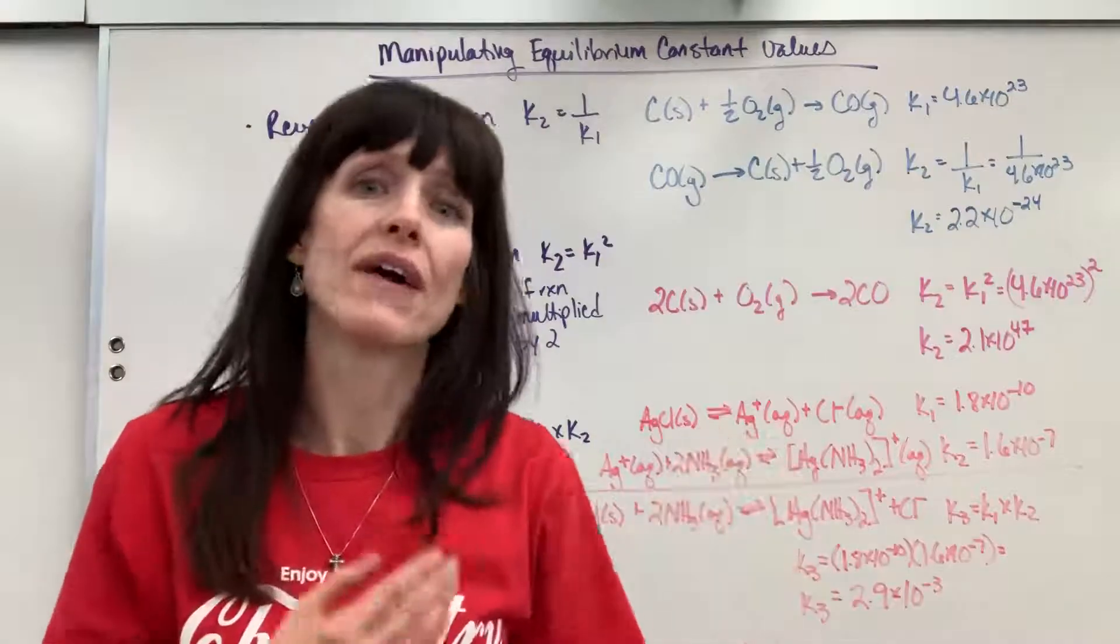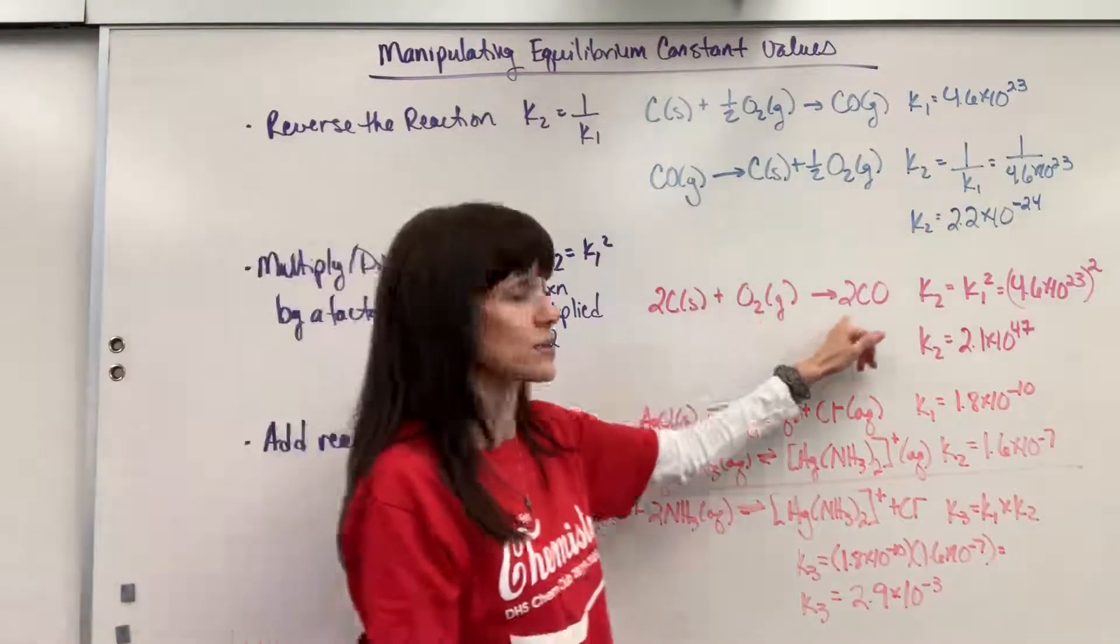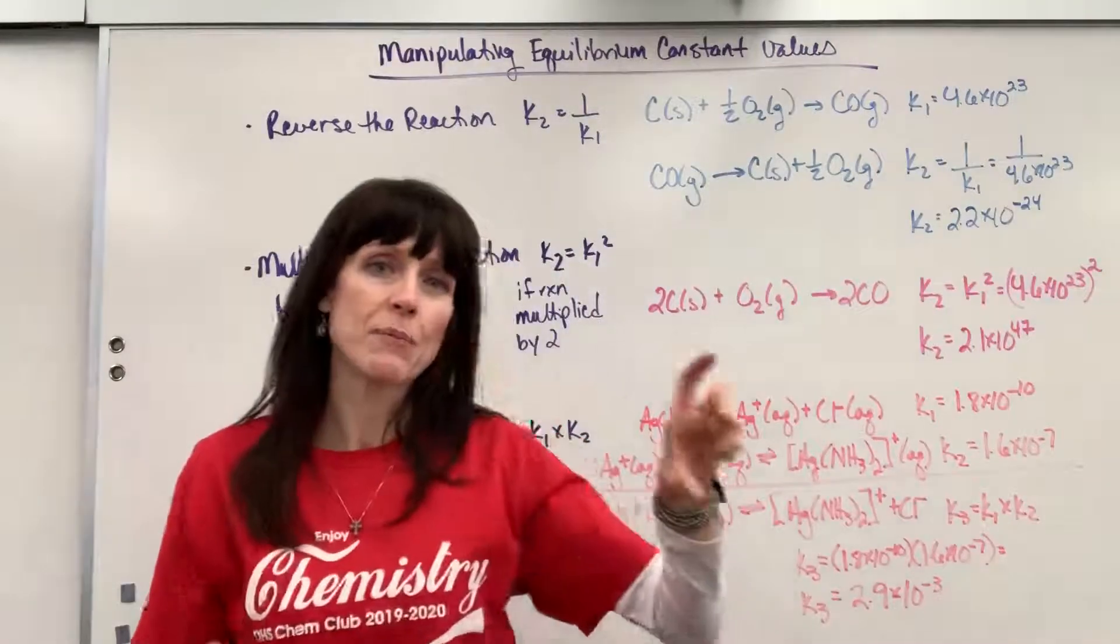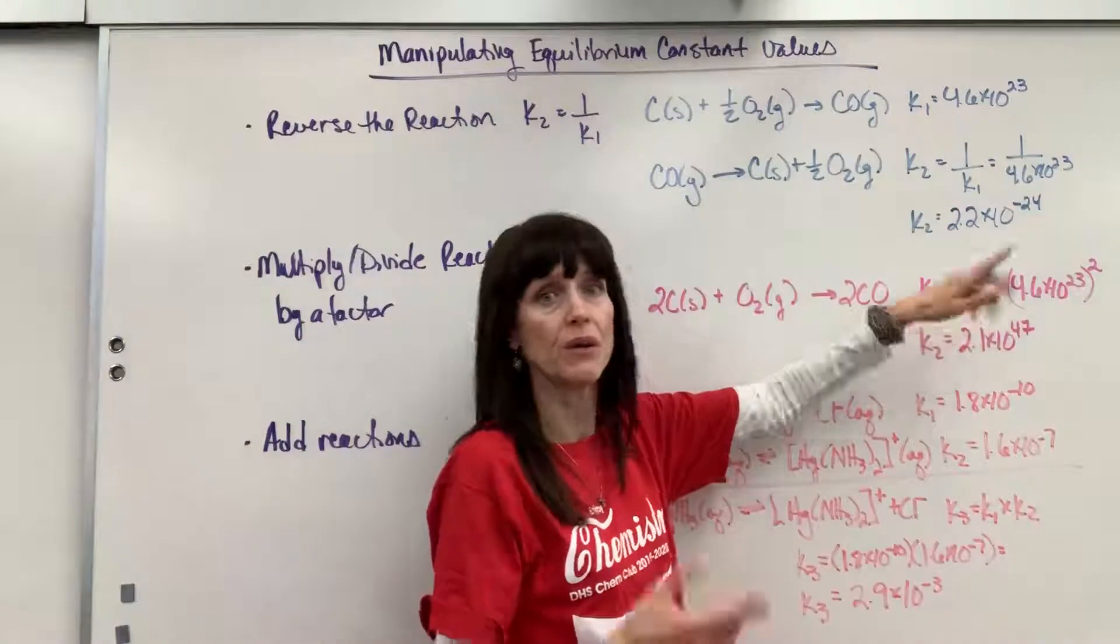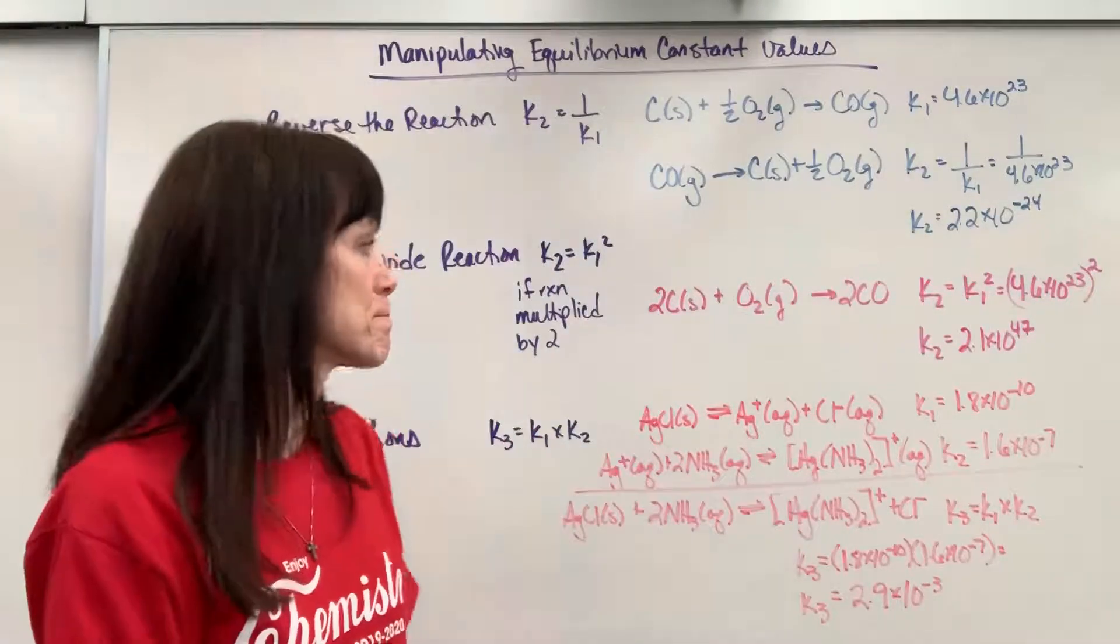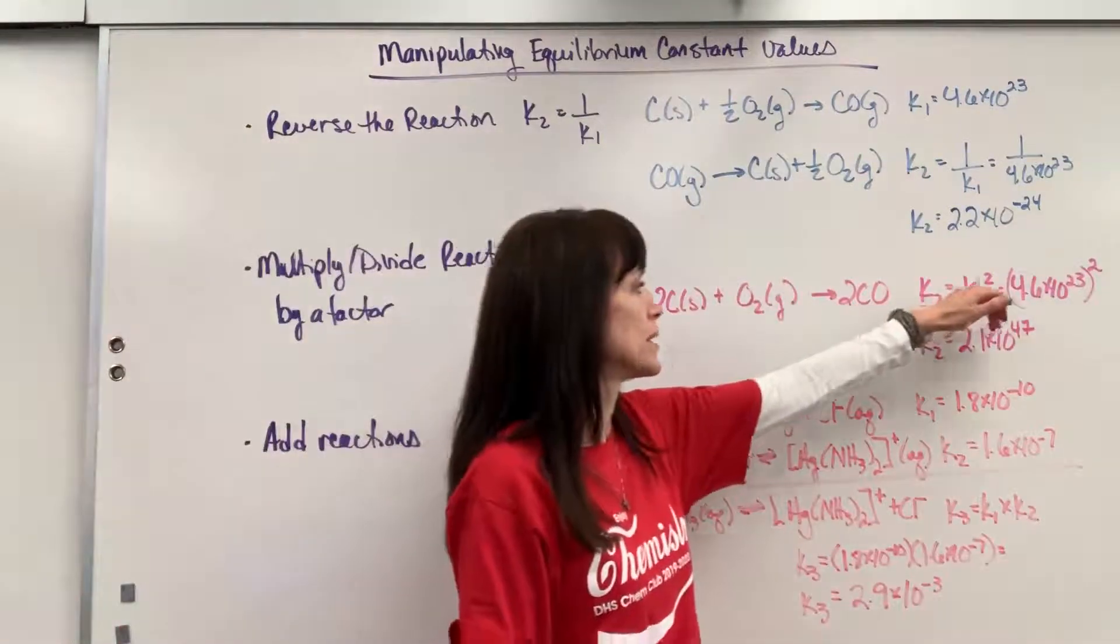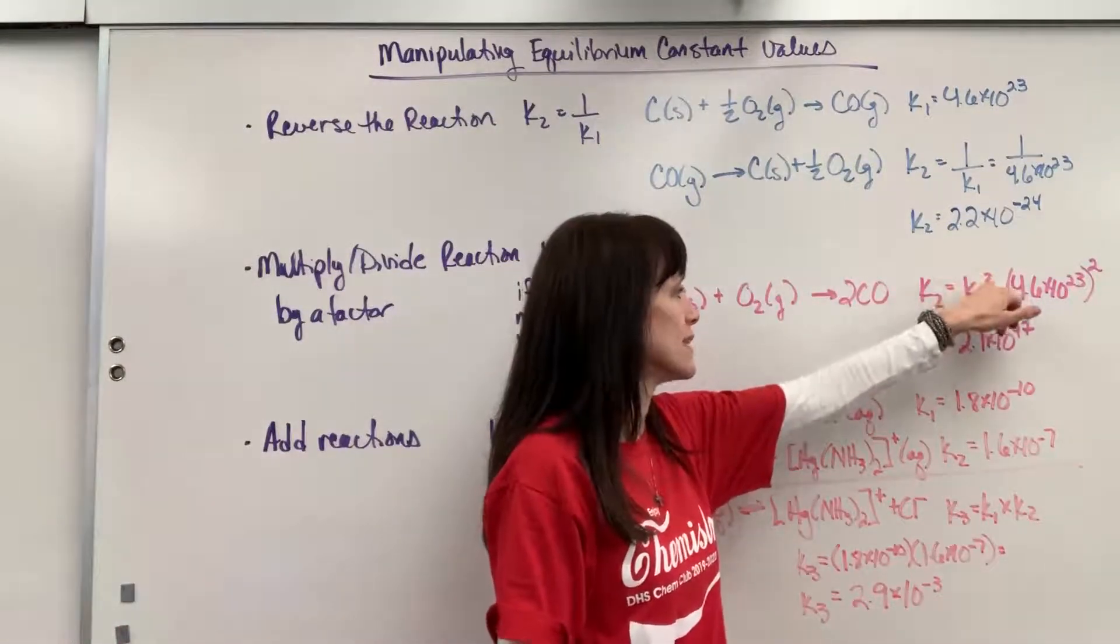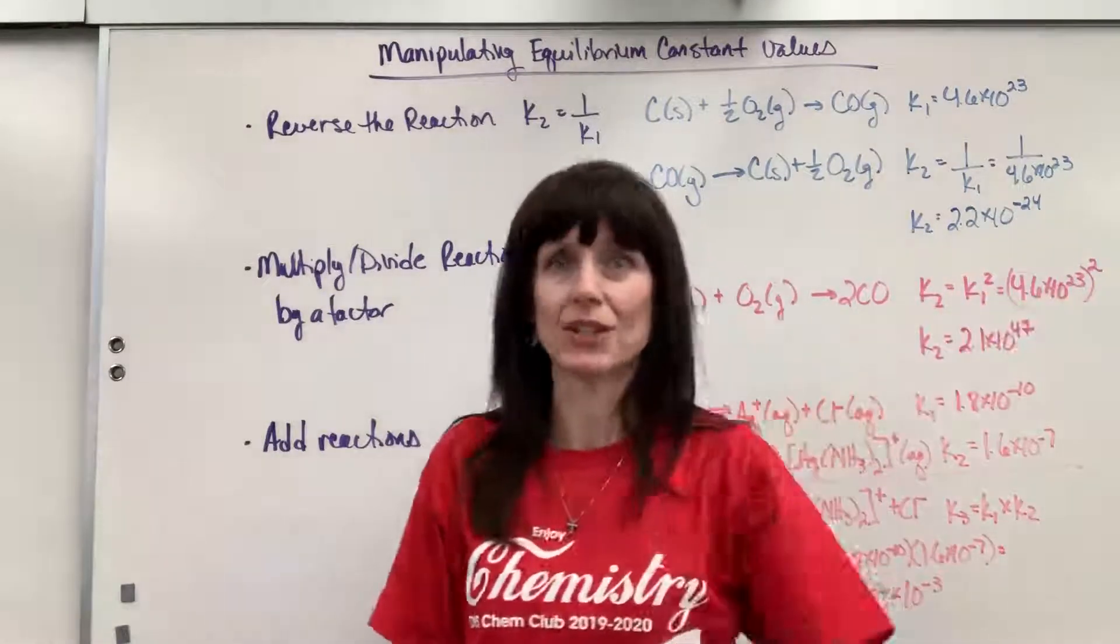Now, just for posterity, what if I had divided by 2? What if this was 1 half plus 1 fourth plus 1 half? Well, if I multiply by a factor of 1 half, then I would raise that equilibrium expression to 1 half. It would be to the power of 1 half. I would square root it. So there's your takeaway. Whatever the factor is, that's what you're going to raise the equilibrium expression to that exponent.